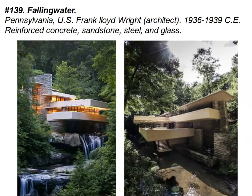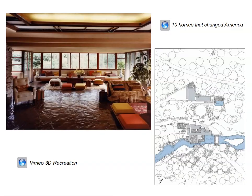Now we continue to number 139, Fallingwater — a building in Pennsylvania, created by architect Frank Lloyd Wright, constructed from 1936 to 1939 using reinforced concrete, sandstone, steel, and glass. Fallingwater is one of those homes that really changed America and changed how art and the modern home was perceived. The mid-1930s were among the darkest years for architecture in American history — the country's financial system had collapsed, almost no private homes were built, and many architectural projects were halted for lack of funds.